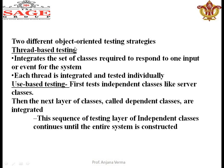There are two types of object-oriented testing strategies: thread-based and use-based. A thread is a lightweight process that integrates a set of classes required to respond to one input or event. We test how many classes are required for one event — that is thread testing — and each thread is integrated and tested individually. The second strategy is use-based testing: the base class that is independent is validated first, then its dependent class is tested, then their dependent classes are tested, continuing layer by layer until the entire system is constructed.